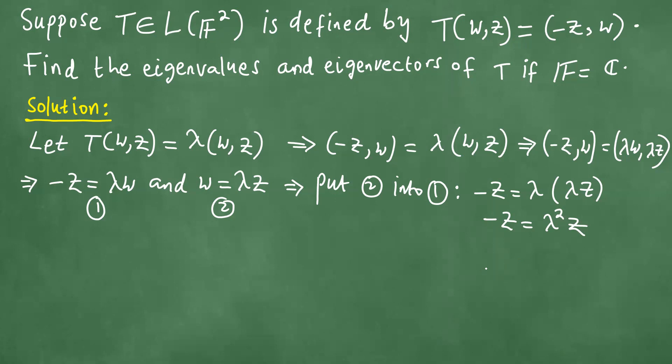We know that z is not zero, because if z were zero, w would be zero as well in equation 2, and that means we'd have a zero eigenvector, which is not the case. So we can divide through by z, getting λ² = -1, which means λ = ±i.